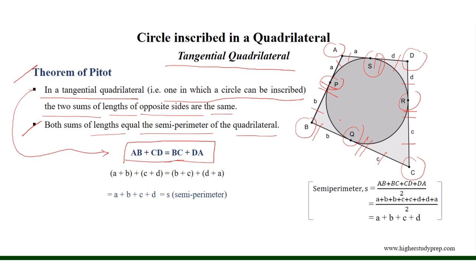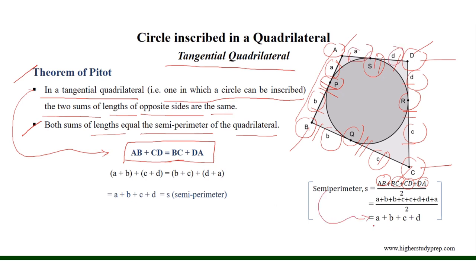Therefore, the semi-perimeter equals AB plus BC plus CD plus DA divided by 2, where AB equals A plus B, BC equals B plus C, CD equals C plus D, and DA equals D plus A, which helps us to get that the semi-perimeter equals A plus B plus C plus D.